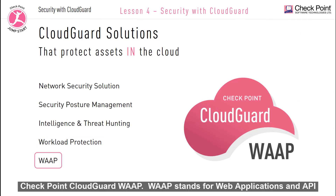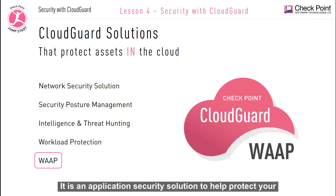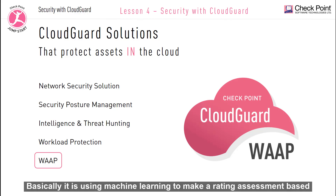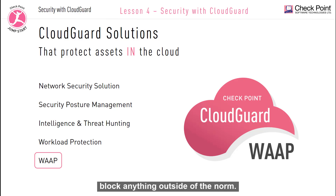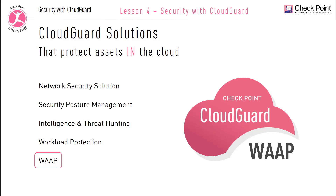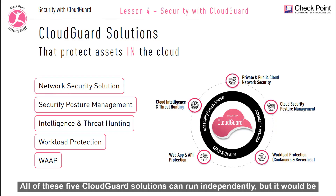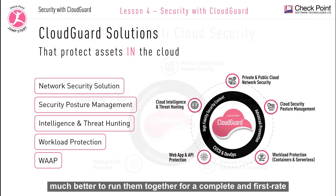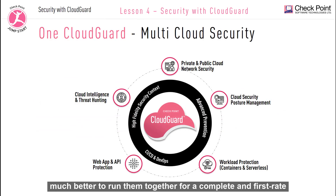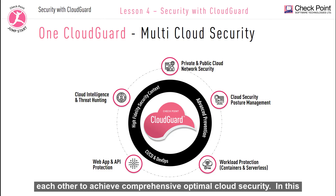Checkpoint CloudGuard WAF — WAF stands for Web Applications and API Protection — is an application security solution to help protect your cloud-native applications. It uses machine learning to make a rating assessment based on history to determine and predict user and application behavior and block anything outside of the norm. All five CloudGuard solutions can run independently, but running them together provides a complete, first-rate security solution, as each capability complements the others for comprehensive, optimal cloud security.